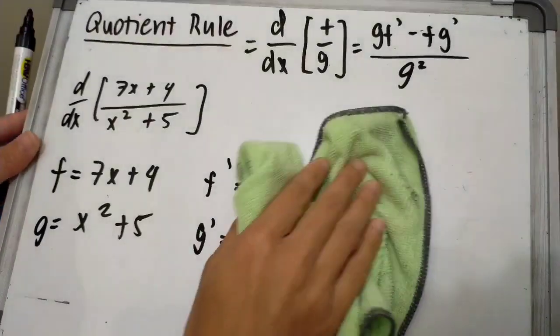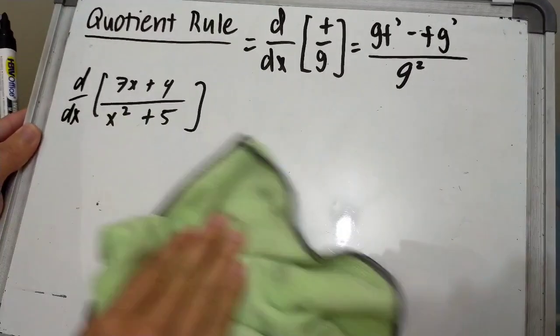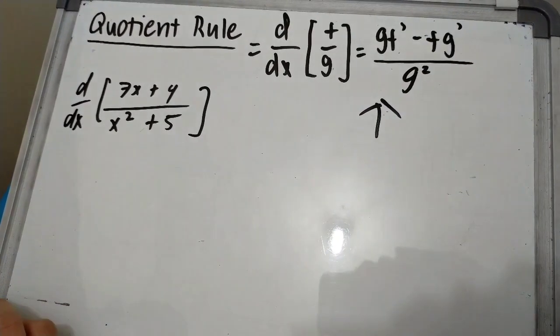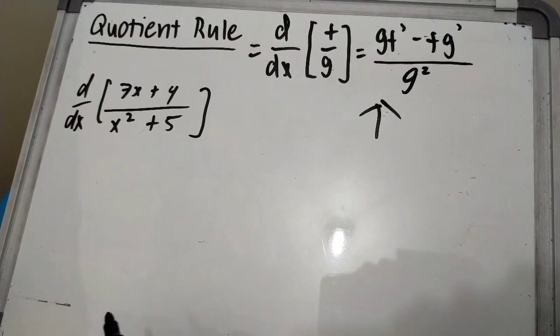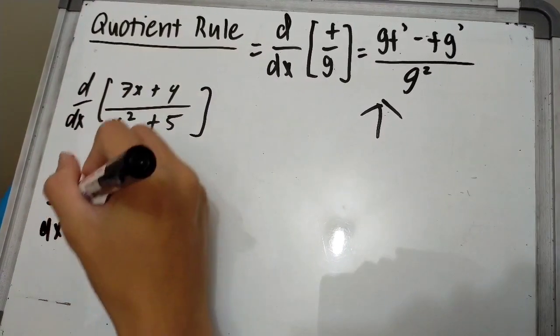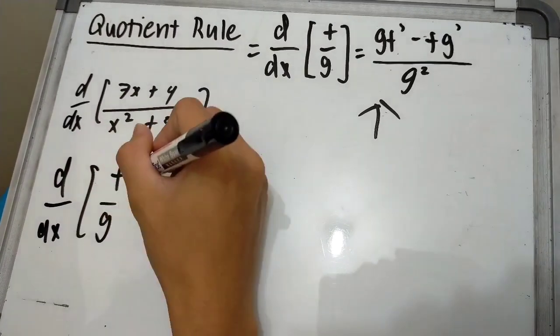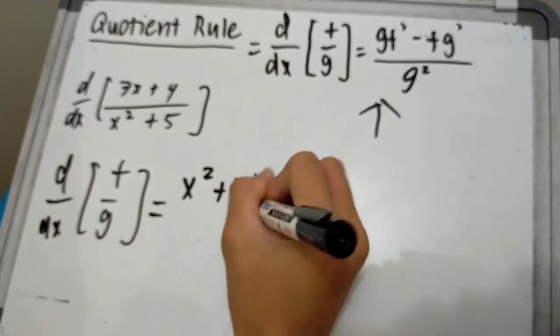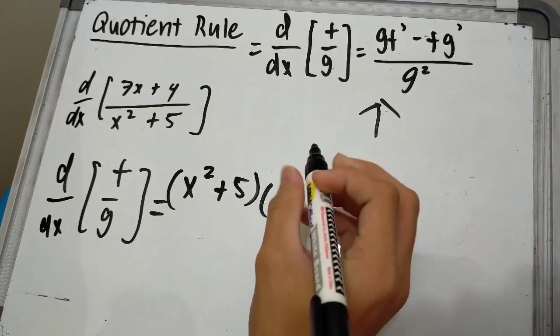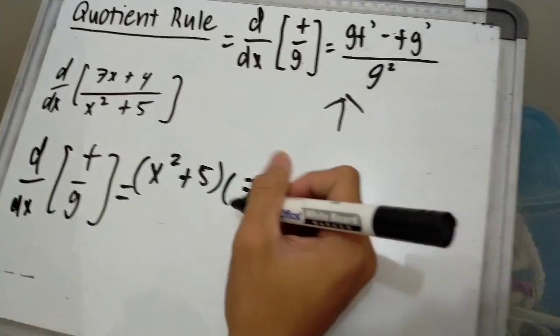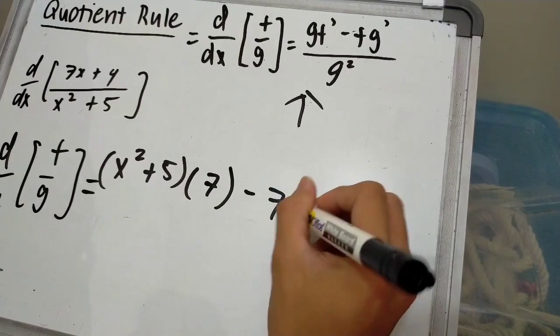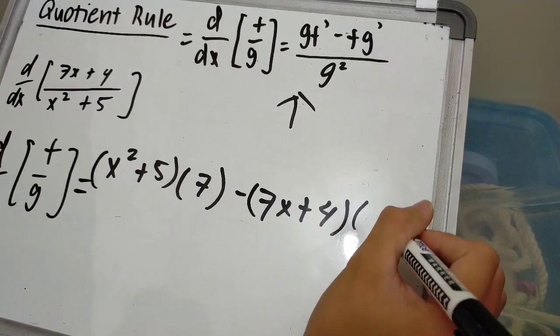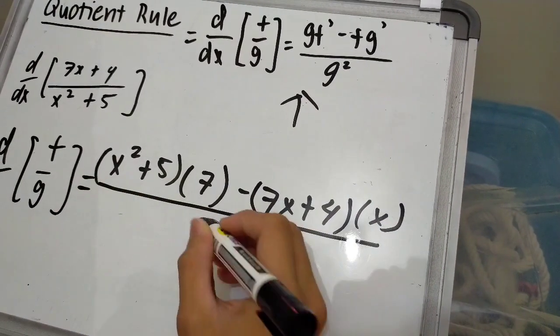Let us now solve using this formula. We can find the derivative of (7x + 4) divided by (x² + 5). It's (x² + 5) times f', which is 7, minus (7x + 4) times 2x, all over (x² + 5)².